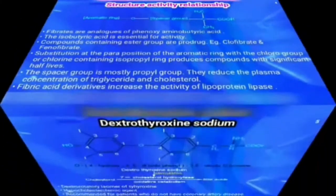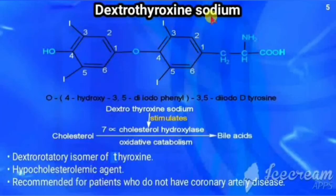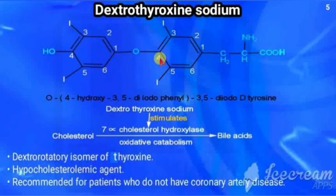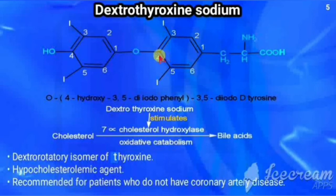The next drug is dextrothyroxine sodium. It is the dextrorotatory isomer of thyroxine. The structure of tyrosine is: benzene ring with OH, CH2, CH(NH2), COOH. So tyrosine is that structure — OH, benzene ring, CH2, CH(NH2), COOH. With tyrosine, by replacing one hydrogen of the OH, the whole diiodinated hydroxyphenyl group is attached.